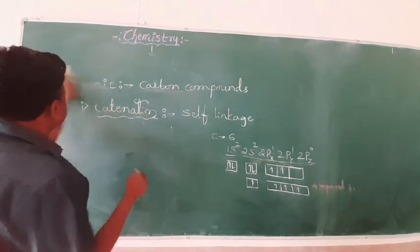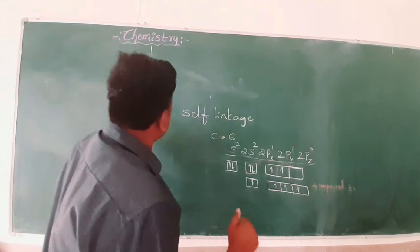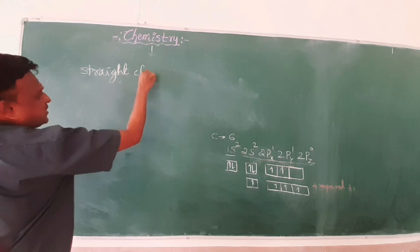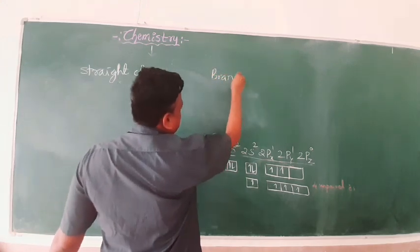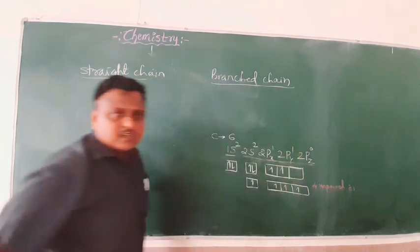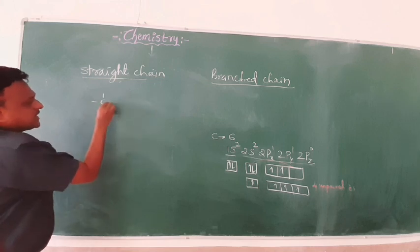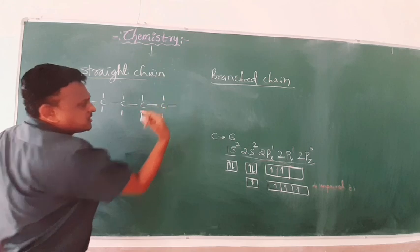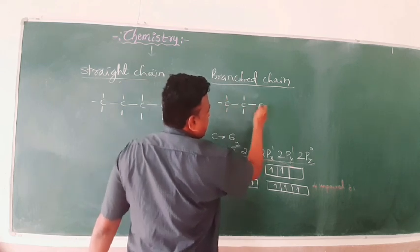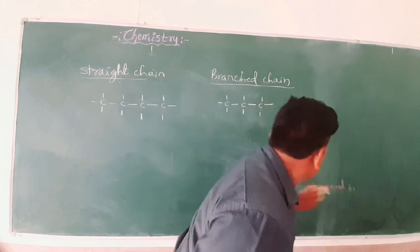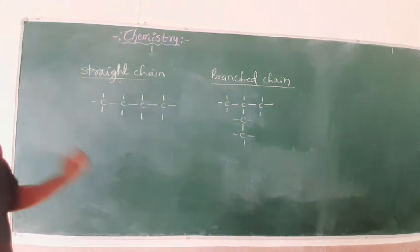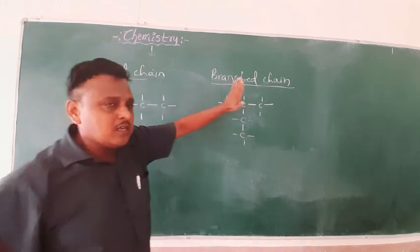Due to catenation, a variety of linkages take place. There are two types: straight chain and branched chain. This is due to carbon's tetravalency — carbon can combine in a straight chain as well as a branched chain.